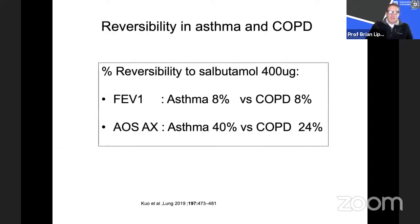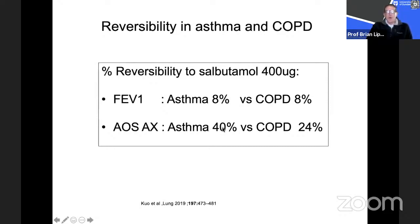Regarding reversibility in asthma versus COPD: when looking at FEV1, you cannot distinguish between asthma and COPD patients — both showed 8% reversibility to salbutamol. But using airway oscillometry and measuring the area under the reactance curve AX, asthmatic patients had about twofold greater reversibility to salbutamol compared to those with COPD. This tells you something really important about the difference between a forced expiratory technique measuring FEV1 and a tidal breathing method measuring the reactance area.